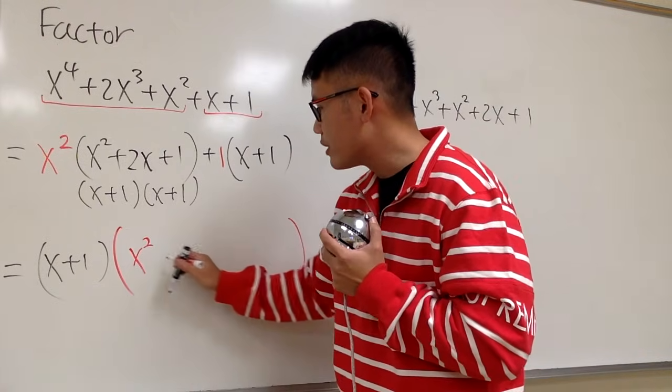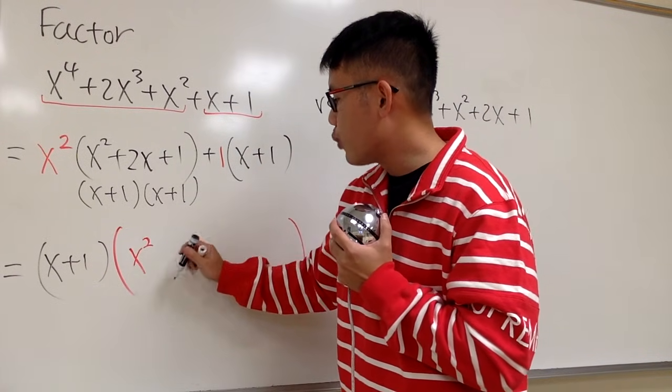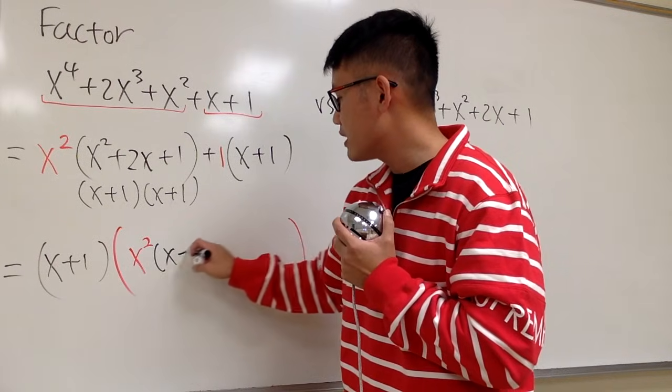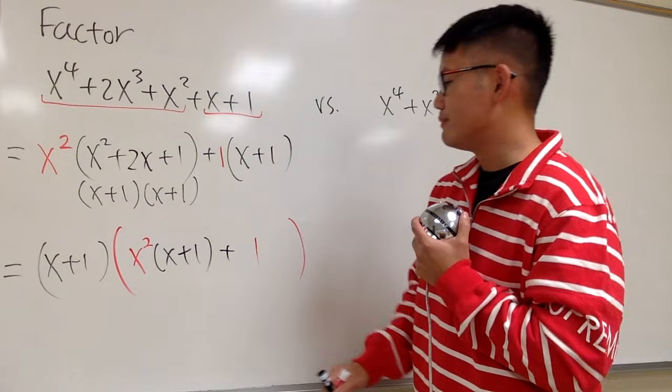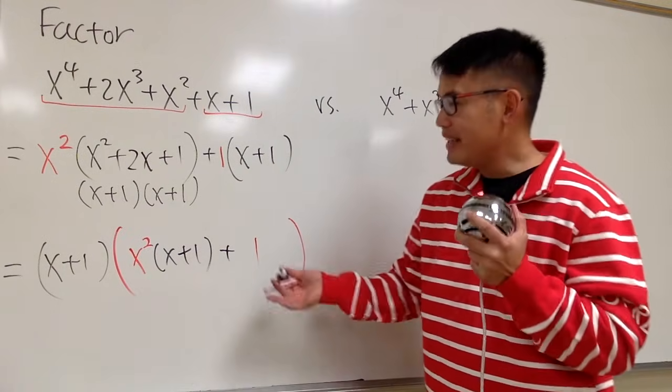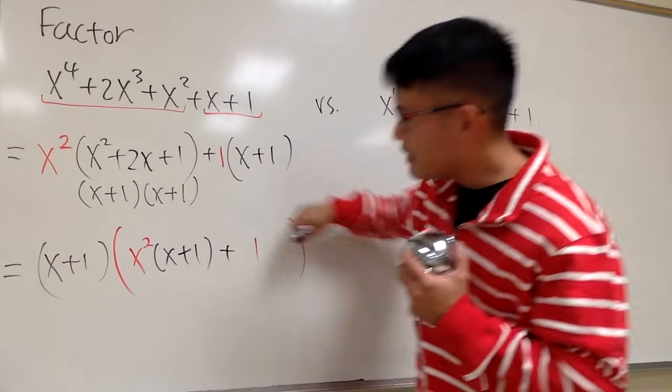This right here is the one that we still have left, x plus 1, I'll put down in black. And then we add this one. And you see, we have a factor times another thing. We factored it.